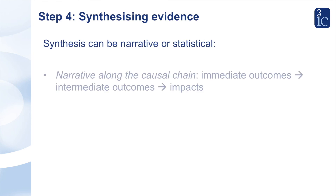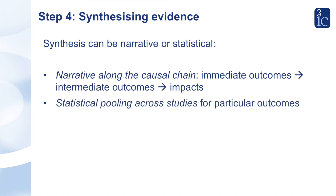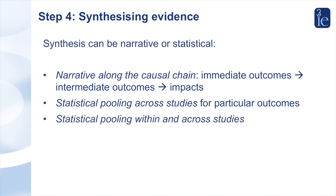In the fourth step we synthesize the evidence, and the synthesis can be narrative or statistical. Narrative synthesis should usually be done along the causal chain — for example, in a review of land tenure reform the causal chain would go from access to credit, to improved investment, to improved farm production, and to improved household welfare. Synthesis can also be statistical by pooling across studies for particular outcomes using meta-analysis. Probably the single most policy-relevant reason for doing meta-analysis is that it gives an answer where single studies can't, because of the power of meta-analysis to account for the larger sample sizes from multiple studies.